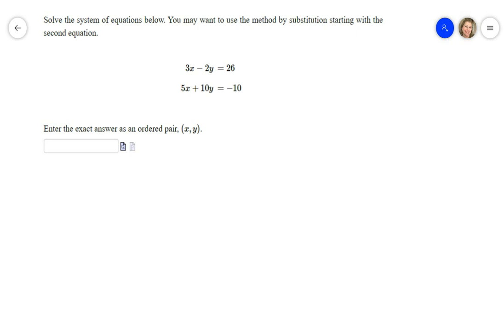Solve the system of equations below. You may want to use the method by substitution starting with the second equation. I'm thinking no because I'm looking at this and I can just multiply that top equation by 5, and that'll give me negative 10 to knock out the positive 10 in the bottom.